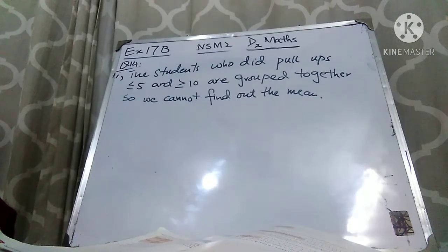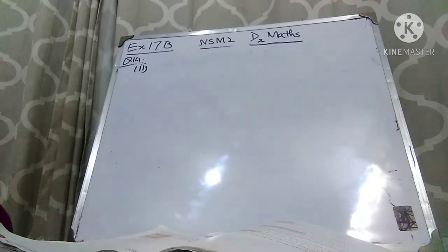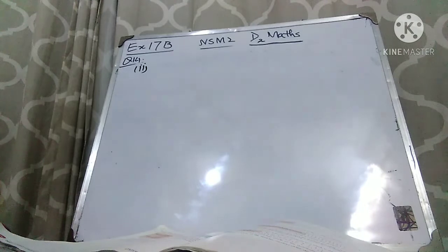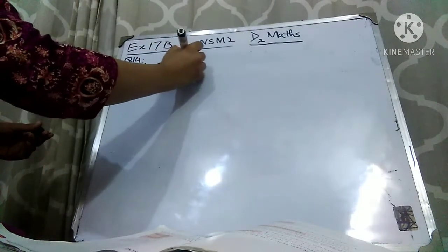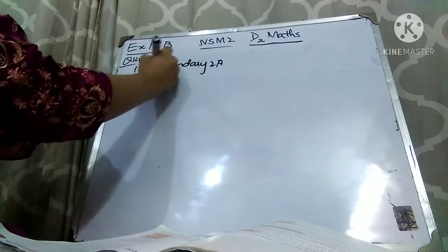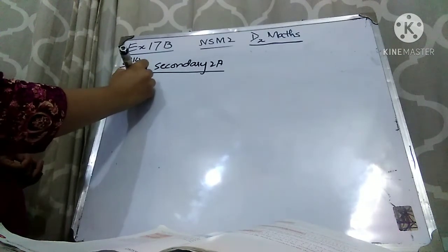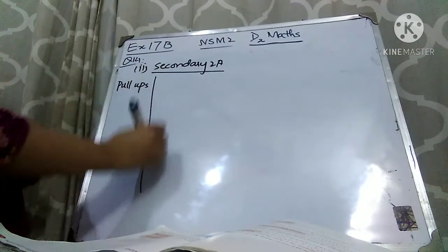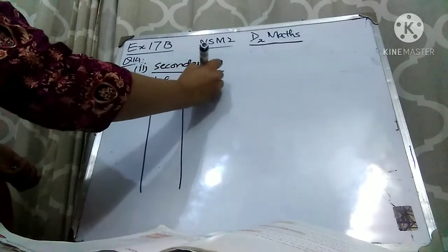Now let's come to part 2. Part 2 asks: find the median number of pull-ups done by the students in each class. To find the median, you need to pick the table. The number of pull-ups are given, and the number of students is basically the frequency. Remember that whenever you want to find the median, you first have to find the cumulative frequency.